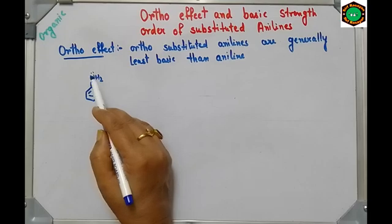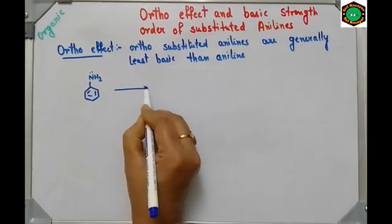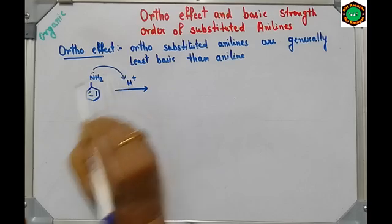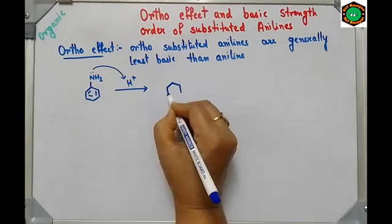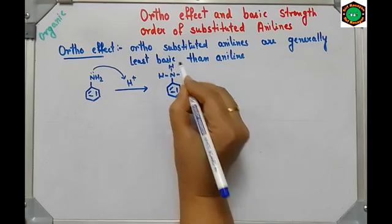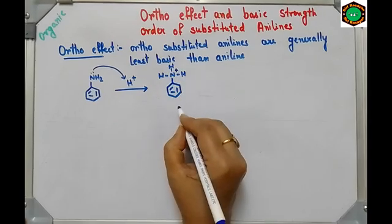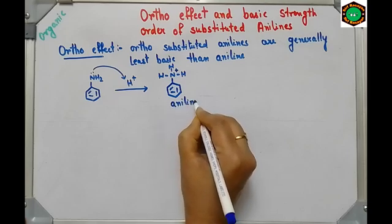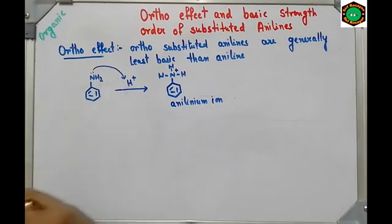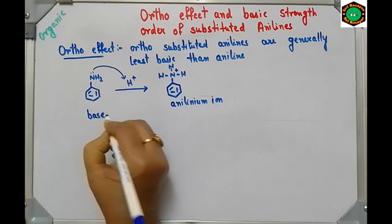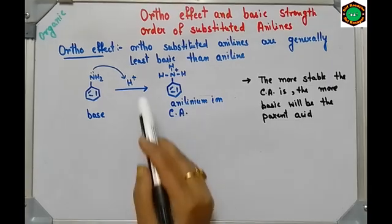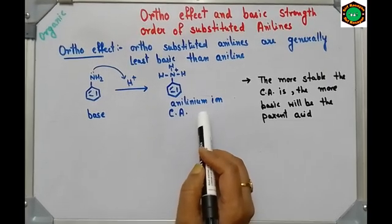The lone pair on nitrogen of aniline is available for donation. If you treat it with H+ (acid), it will donate this lone pair to H+ and will form an anilinium ion. So aniline is donating its lone pair to H+, therefore it is a base, and whatever we get after donation is called the conjugate acid.